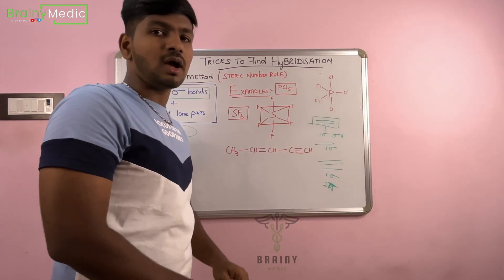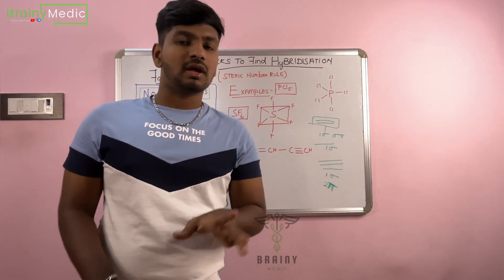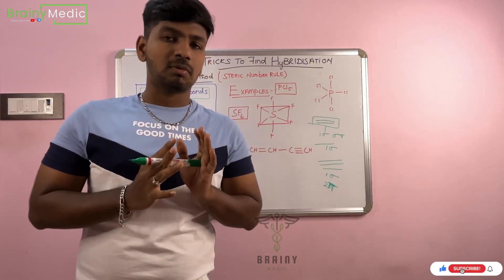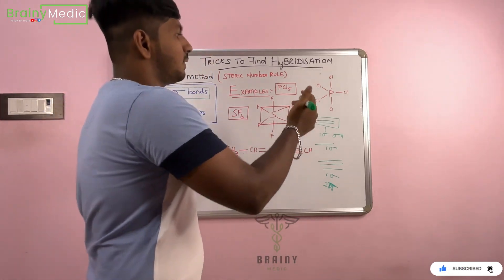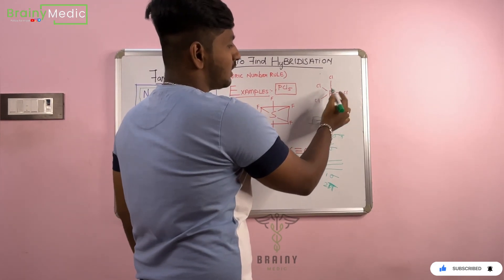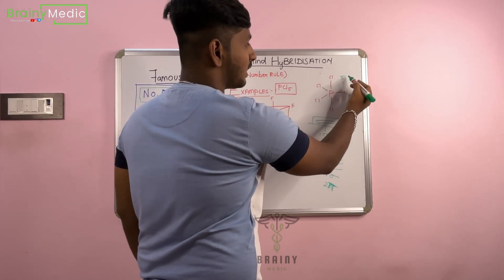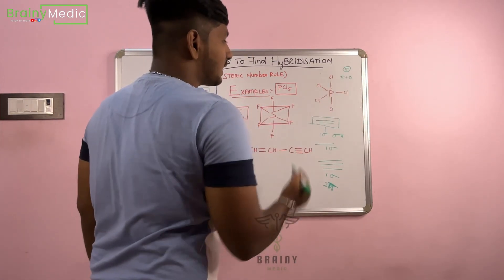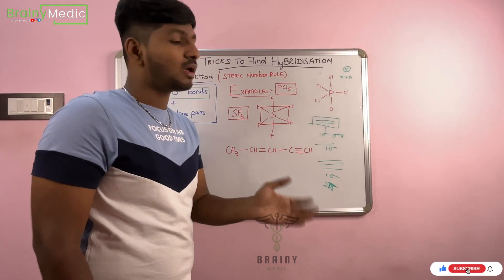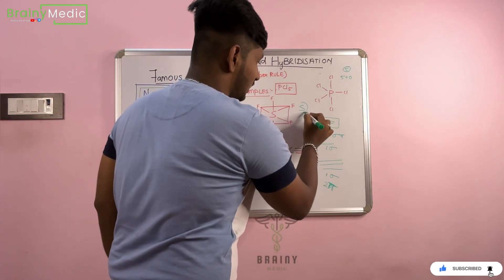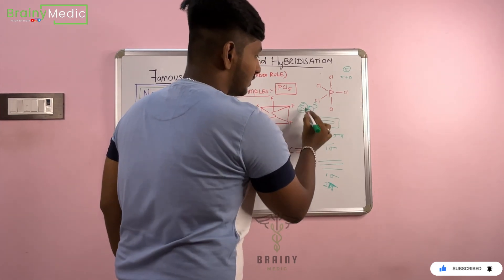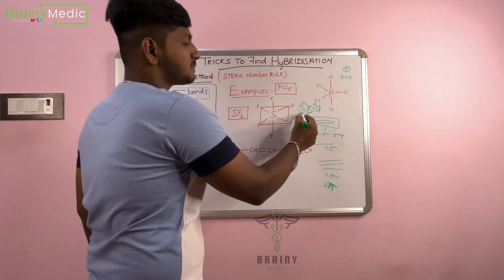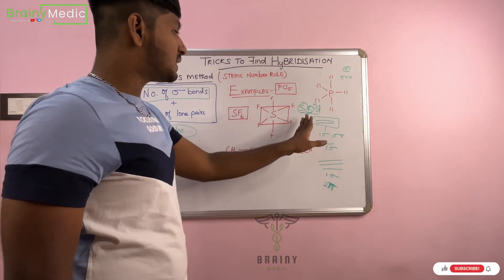Let's check this. Here is PCl5: 1, 2, 3, 4, 5 sigma bonds — there is no lone pair. So 5 plus 0 equals 5. What is 5? It gives us SP3D hybridization. Here is SP3D.